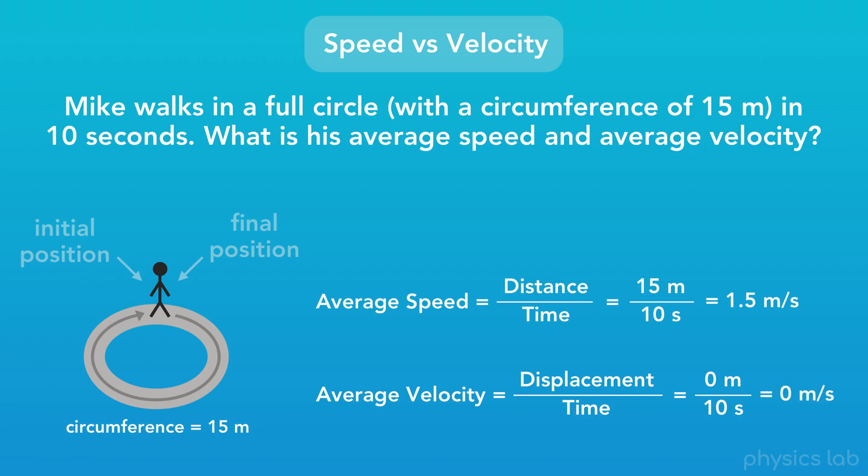That seems kind of strange, because we know Mike was moving as he walked around the circle. But this is how we define average velocity, and in this case, it's 0.